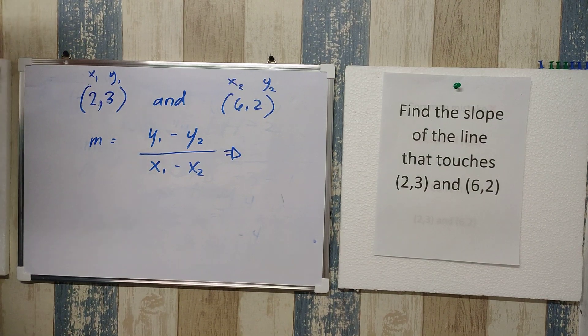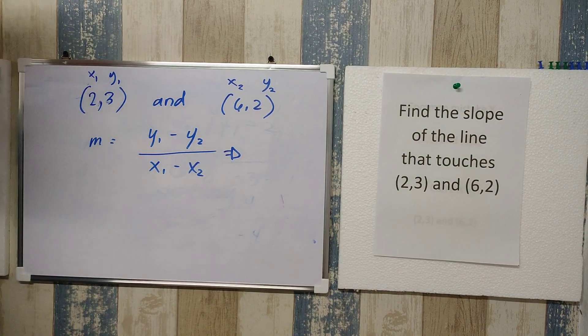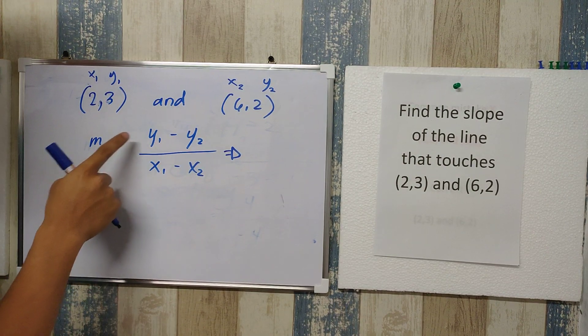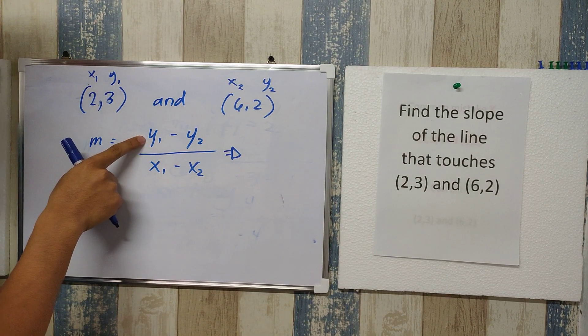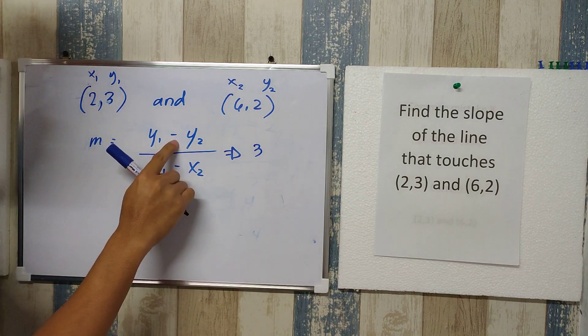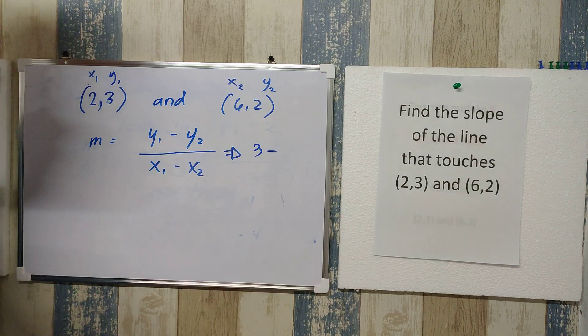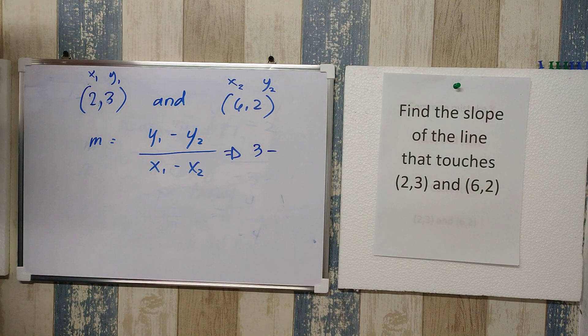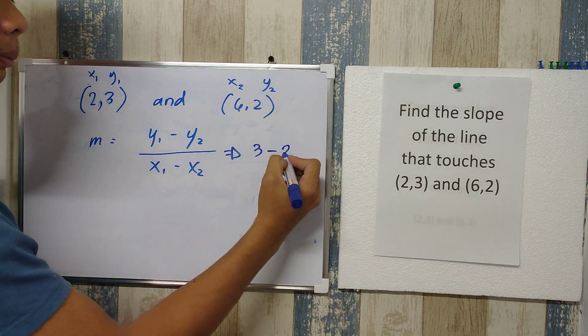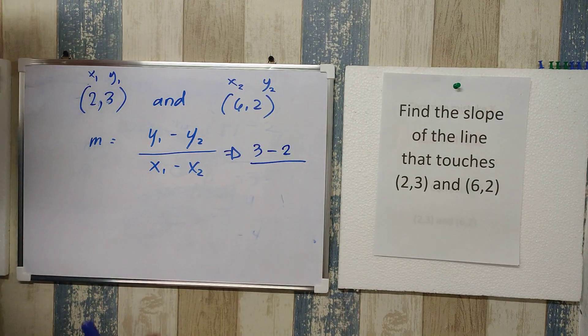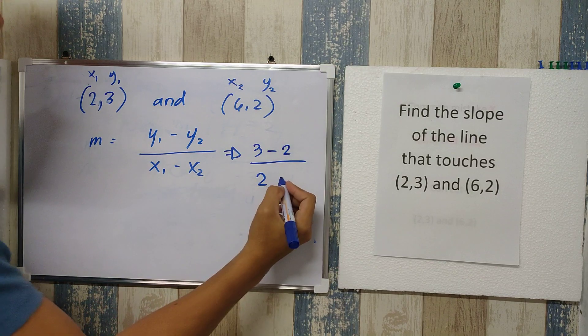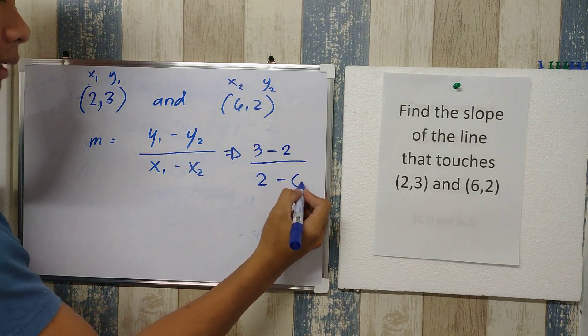The next part will not be very complicated because we just need to substitute the values into this formula. When looking for m, we have to assign what y sub 1 is. In our case, we have 3. We should copy the negative sign here. That's mostly where students make mistakes. Then we have here a y sub 2 which is 2. Fraction bar and then x sub 1 is 2. Copy the subtraction sign here. X sub 2 is 6.